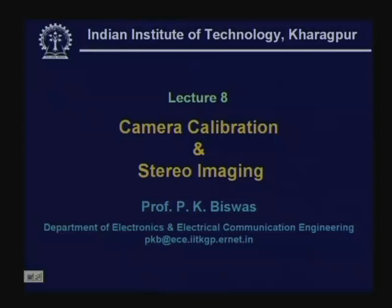Hello, welcome to the video lecture series on digital image processing. Till the last class, we have seen that given a particular imaging geometry where a camera is placed in a 3D Cartesian coordinate system where the world coordinate system and the camera coordinate system are not perfectly aligned, what transformations are applied to 3D world coordinate system points to get the image coordinates via the perspective transformation.